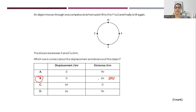The distance is the circumference of the circle, which is 2πr. Displacement, because he has completed the circle and reached back to the same point, is still 0. The radius is half of the diameter, so radius is 3. So 2 × 3 = 6π.